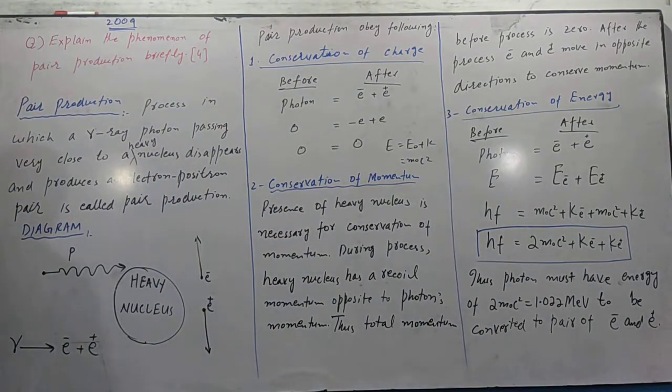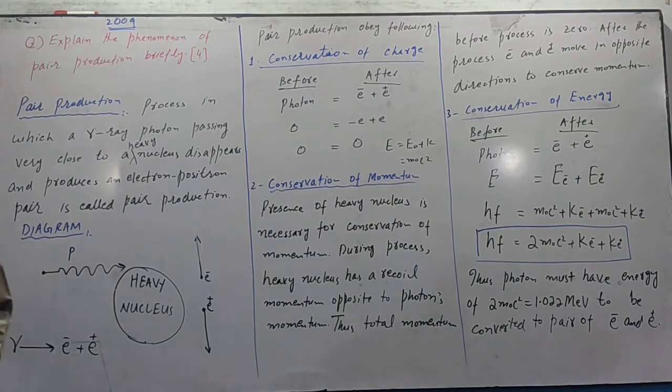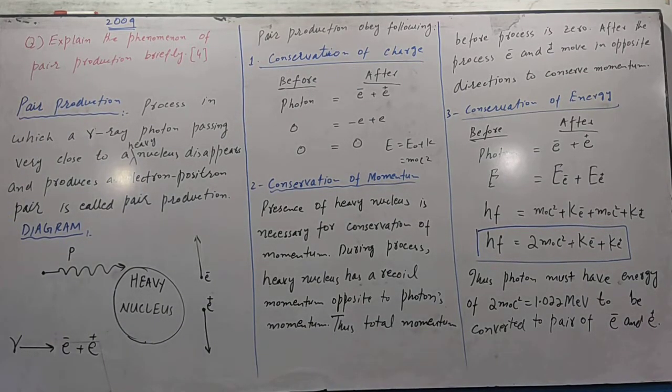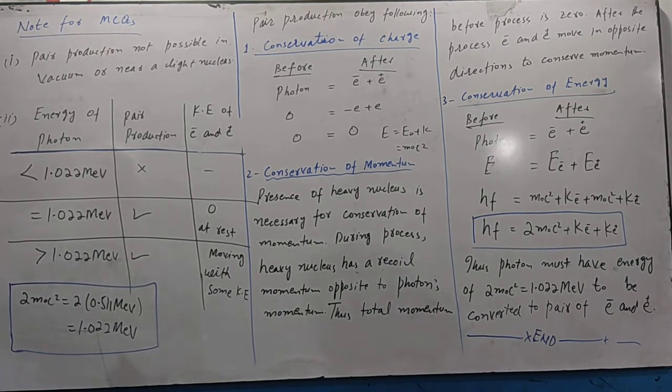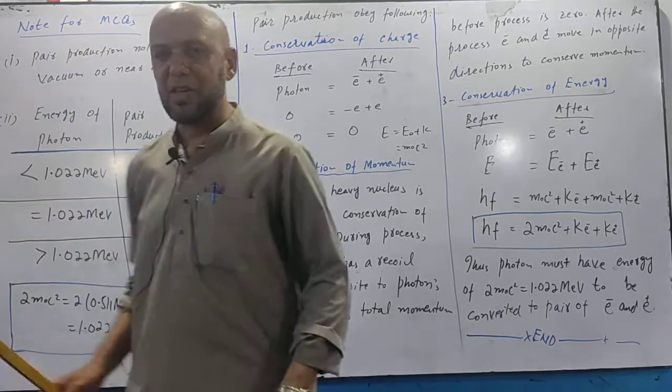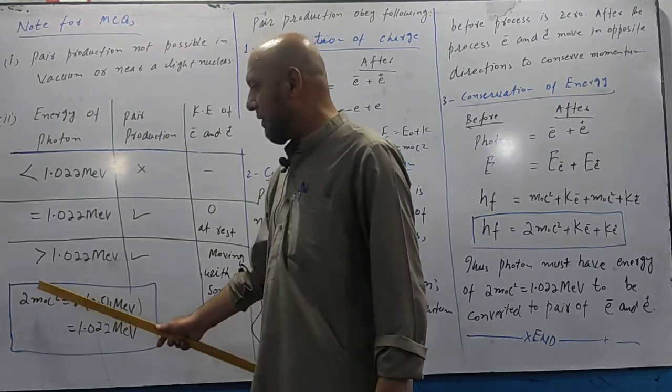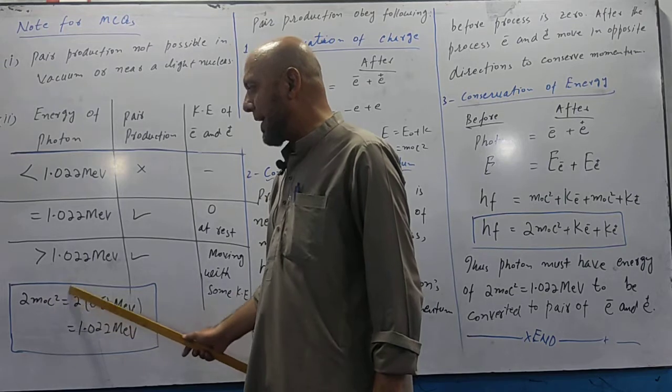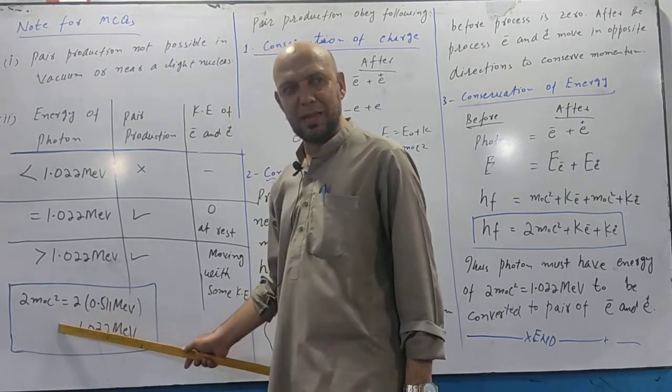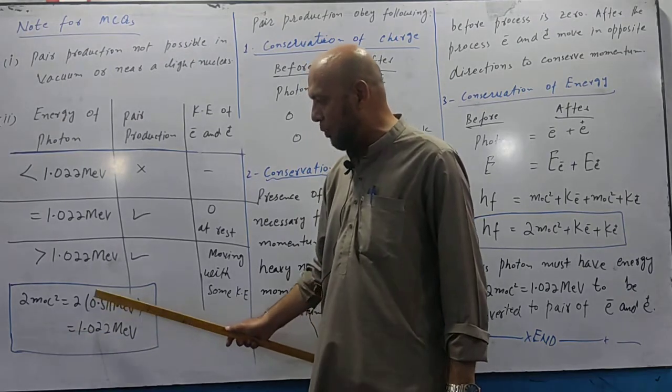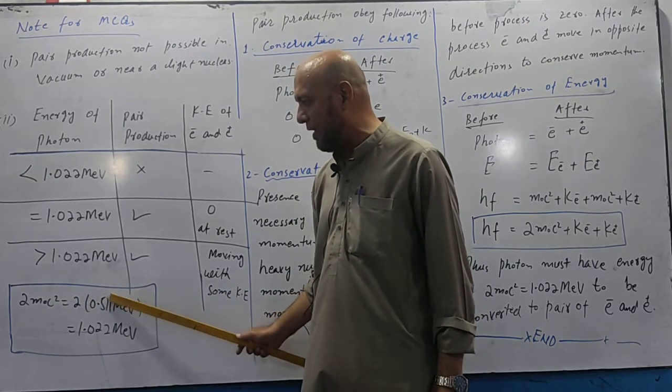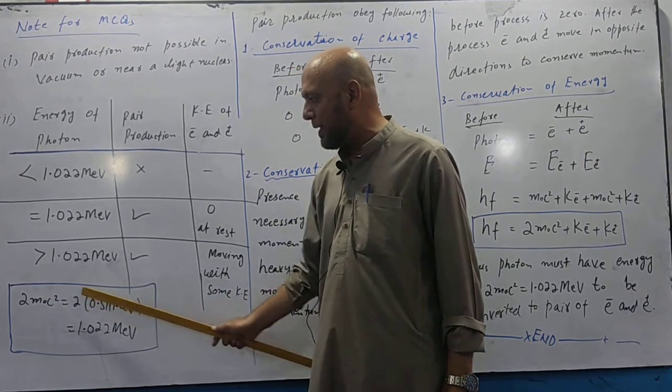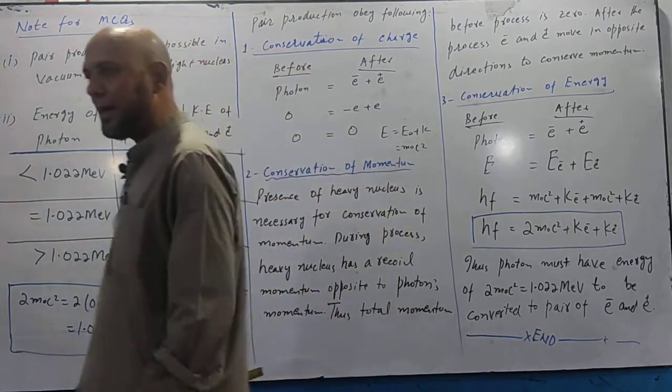This m nought c square - m nought is electron's mass, 9.11 times 10^-31. C is speed of light. If you put these values, you'll get m nought c square in joules. Divide it by 1.6 times 10^-19, you'll get answer 0.511 mega electron volt. M nought c square is 0.511 MeV. Multiply by 2 and you get 1.022 mega electron volt.